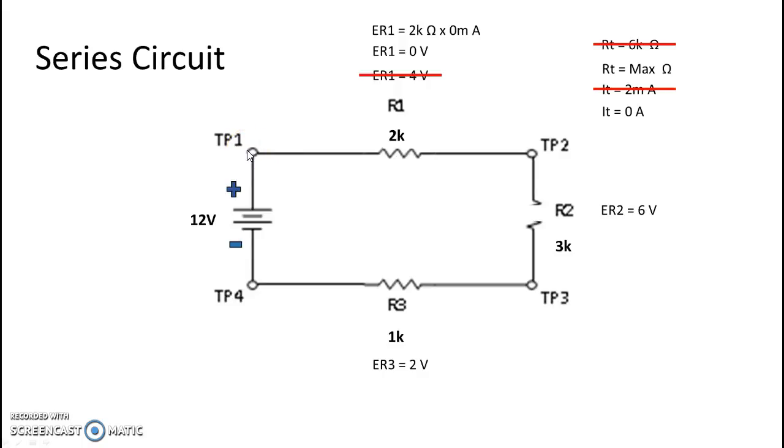If I were to put my meter across test point 1 and test point 2, both leads would read 12 volts. 12 minus 12 equals 0. And the same down here on R3. If I put my black lead on test point 4 and my red lead on test point 3, I would see 0 minus 0 which is 0.